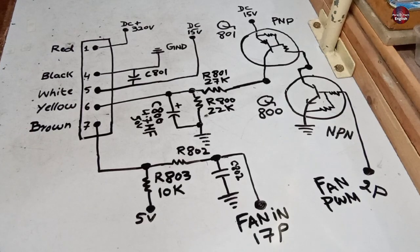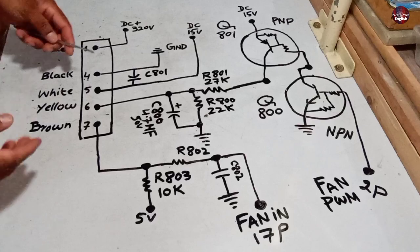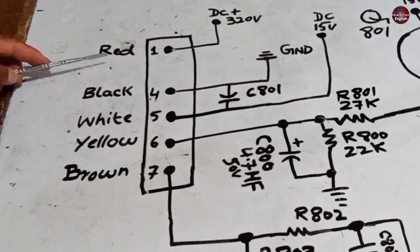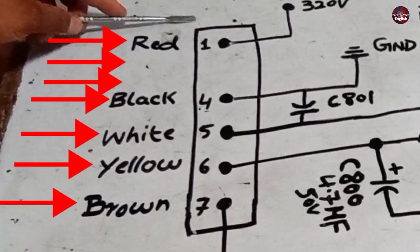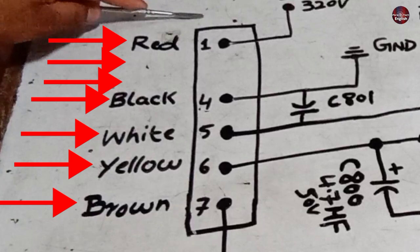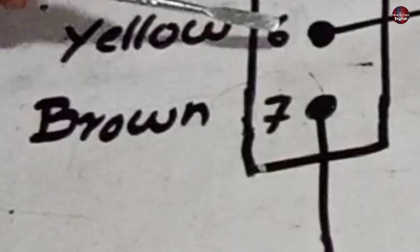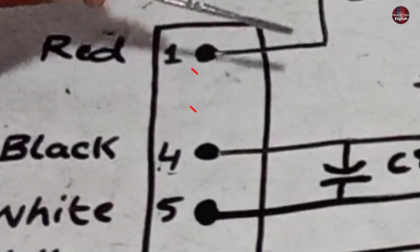I have drawn the schematic diagram here, and now I will explain how it works. This fan connector contains 1 to 7 pins, but the connector pins used in this fan connector are 5, which are 1, 4, 5, 6, 7. 2 and 3 are omitted.